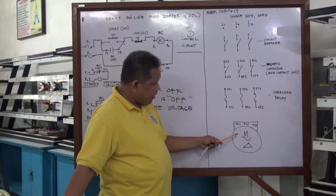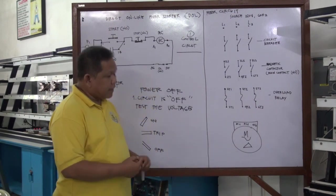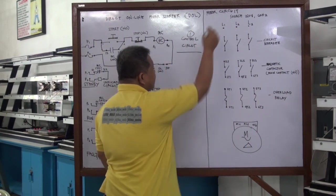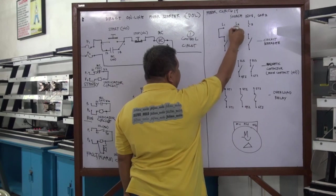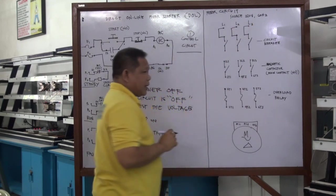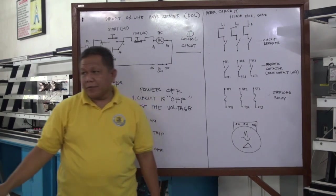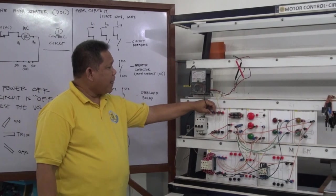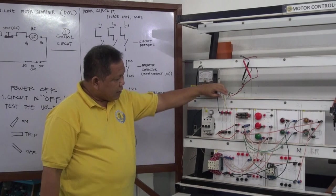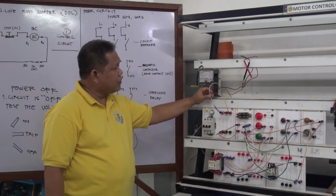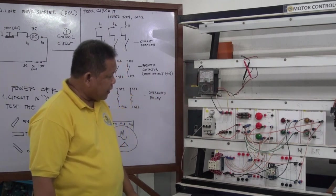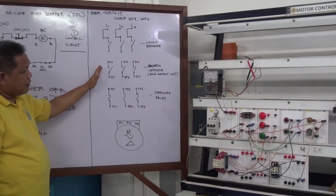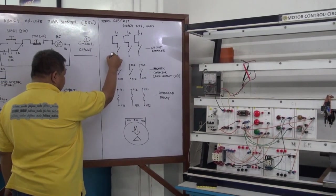The first thing we are going to do is connect our source to the circuit breaker. Line 1 is connected to the circuit breaker terminal. We have three circuit breaker terminals and three lines for our source. Line 1 is already connected. The second terminal is connected to Line 2 and the third to Line 3. Next, we are going to connect the circuit breaker to the magnetic contactor. For Line 1, this is connected to terminal 1L1.